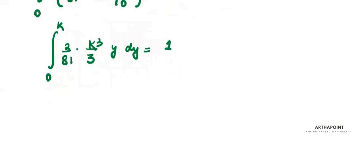Now, this entire thing will be a constant, so I just have to integrate y. So, I will get y square by 2 from 0 to k, 2 by 81, k cube by 3, k cube by 3, equal to 1.